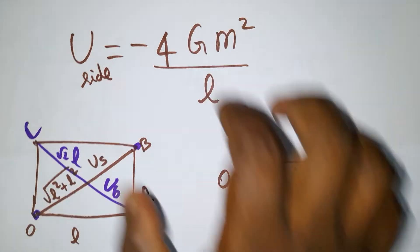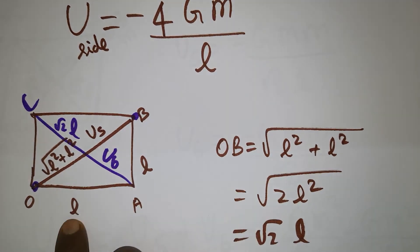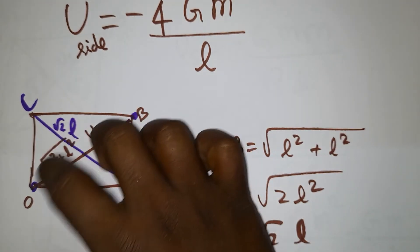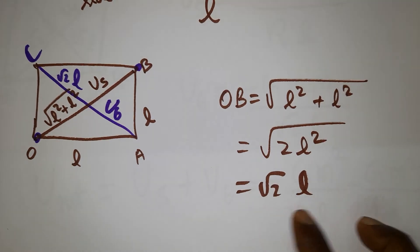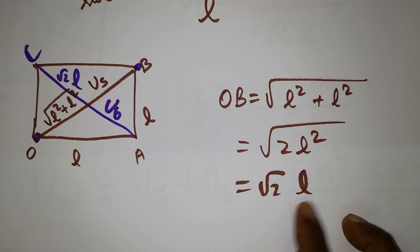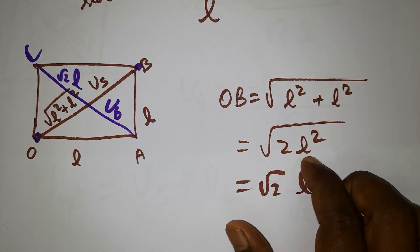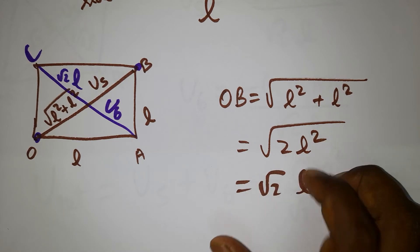The diagonal will be how much? Diagonal length equals root of l square plus l square - I used Pythagoras theorem. So I will get root 2 times l is the diagonal length. Root of 2l square gives l times root 2.